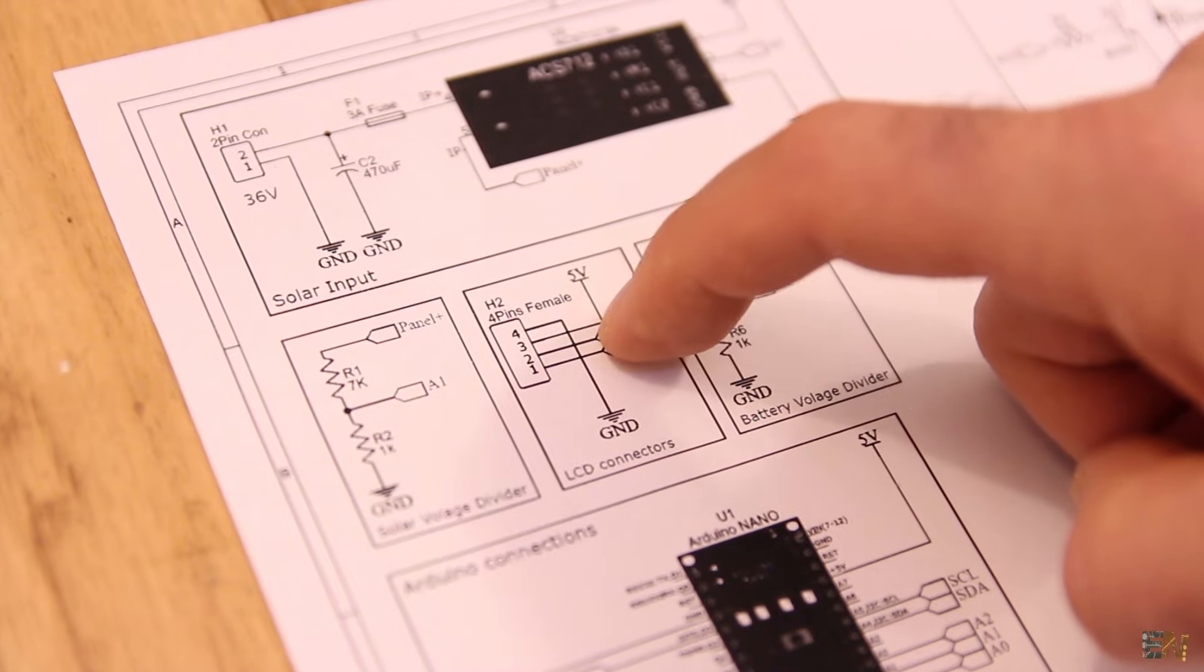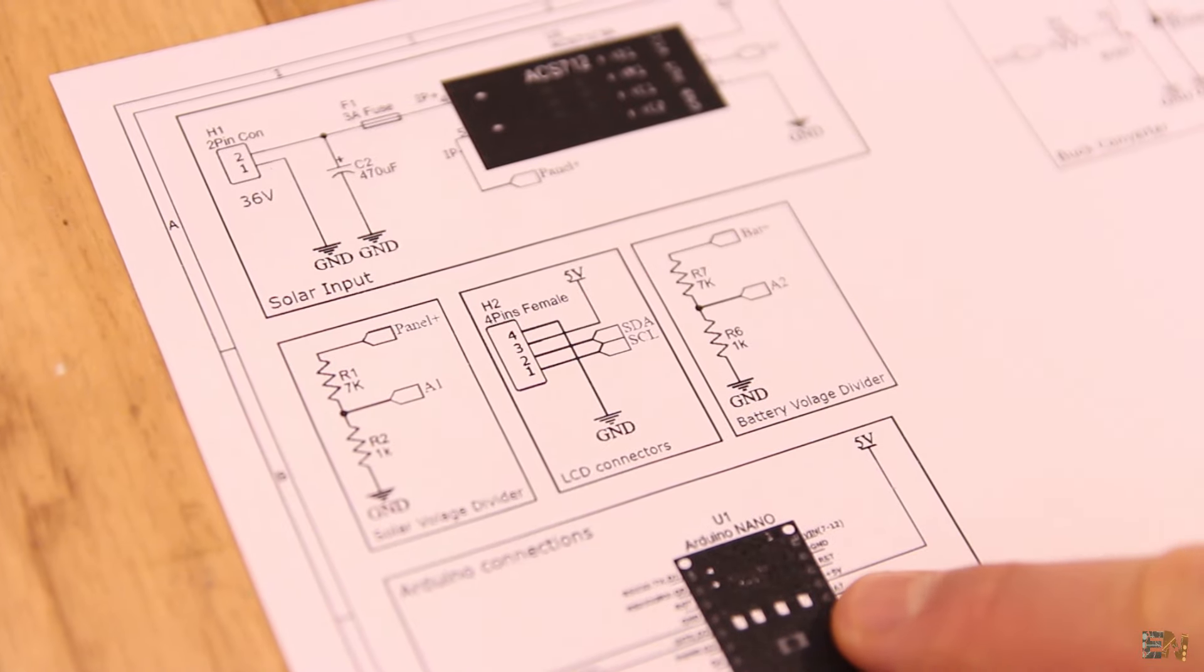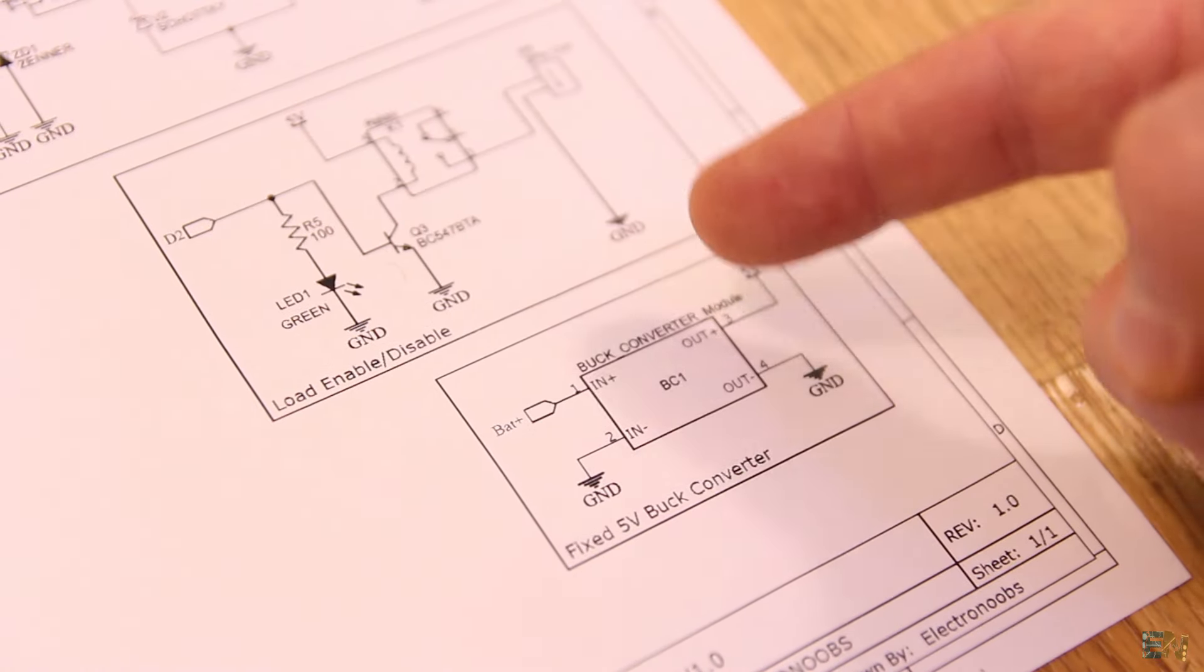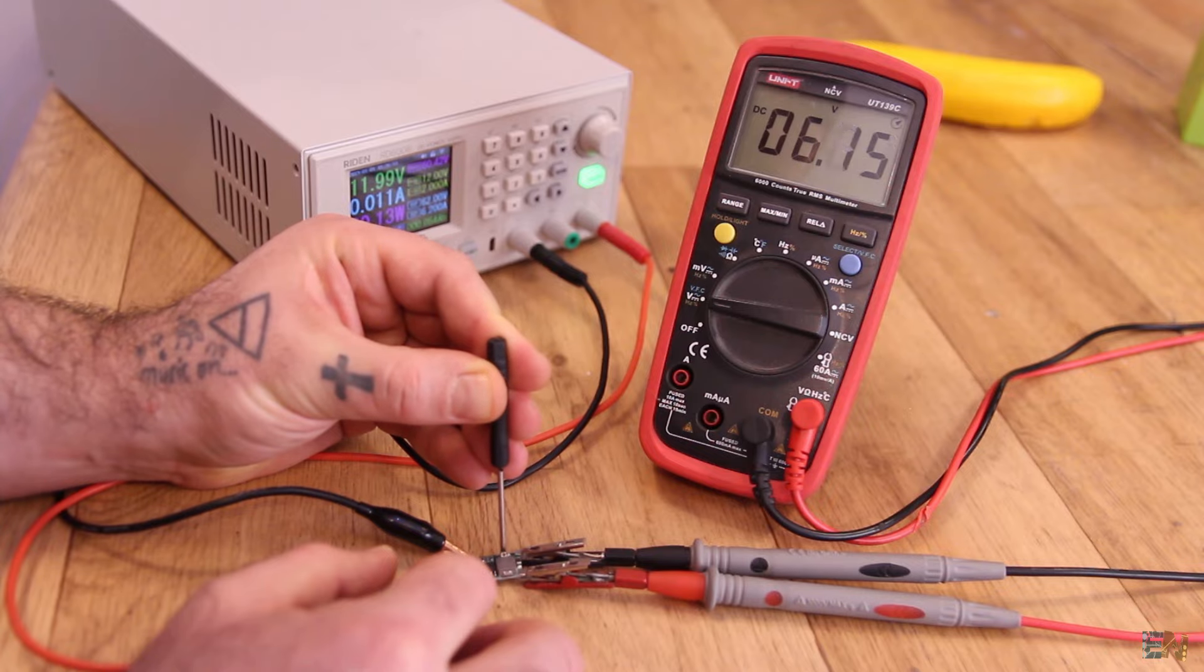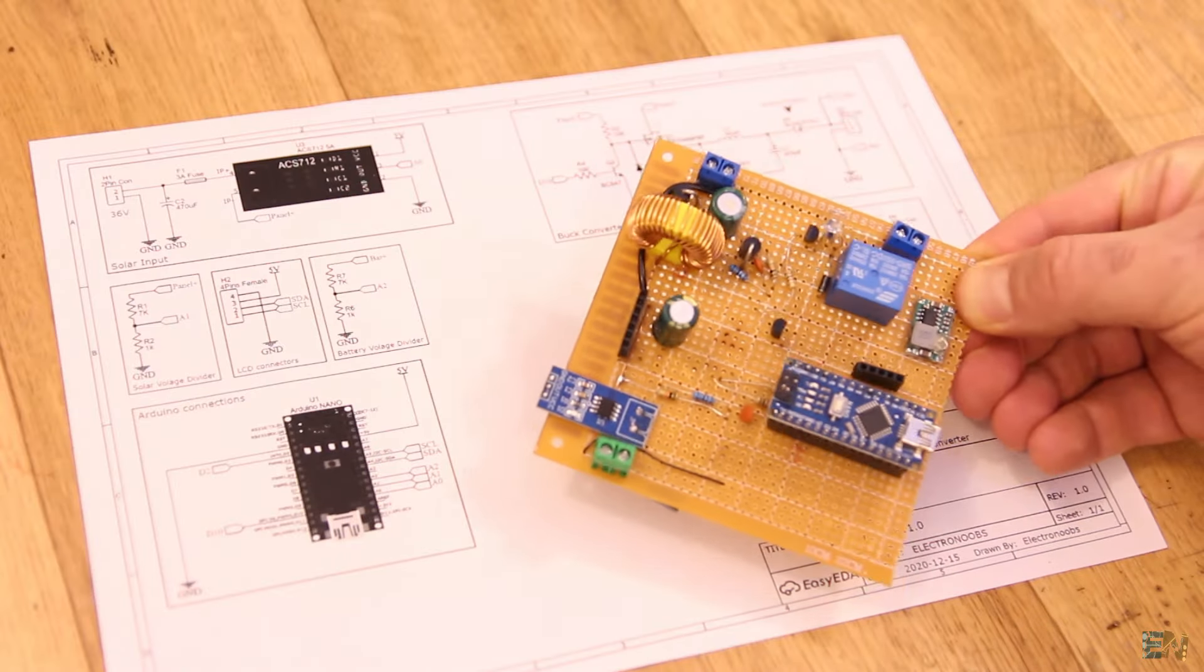I have connections for the LCD screen and the Arduino. I also placed a small buck converter that is set previously to 5V. Follow the schematic and make all the connections for this prototype.